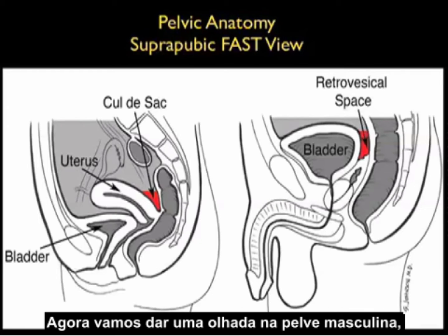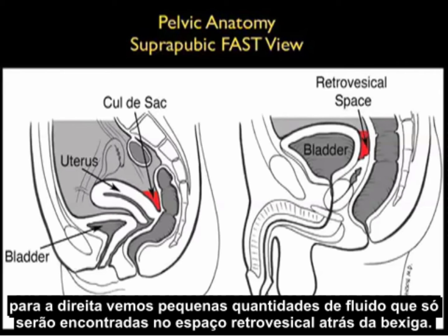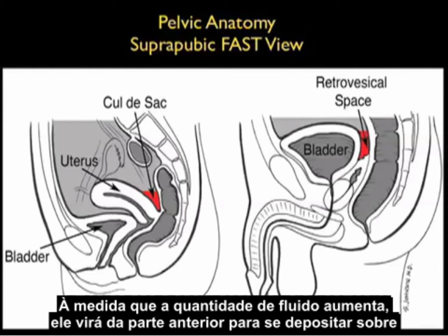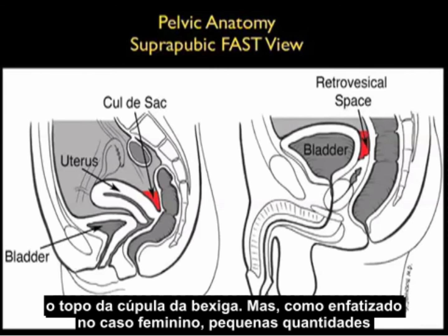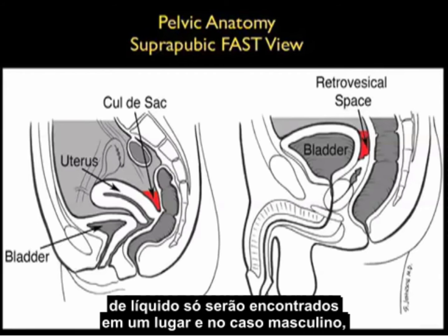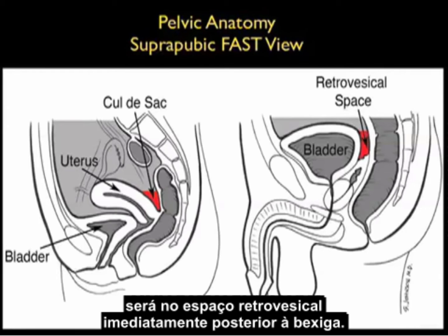In the male pelvis, small amounts of fluid will only be found in the retrovesical space behind the bladder. As the amount of fluid enlarges it will come anterior to settle out over the top of the dome of the bladder, but small amounts of fluid in the male will only be found in that retrovesical space immediately posterior to the bladder.